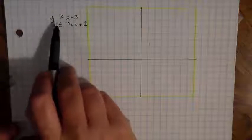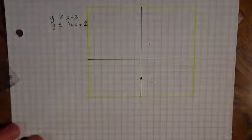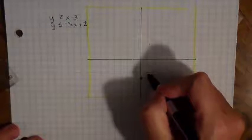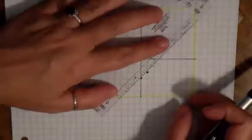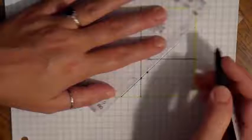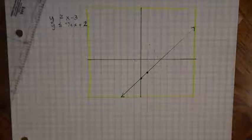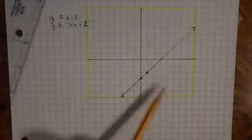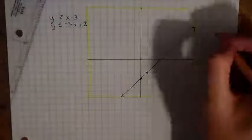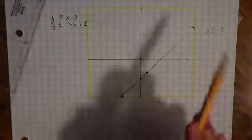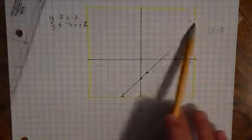I'll start with my first one: y is greater than or equal to x minus 3. I start at negative 3. x has no coefficient, so my slope is 1 — I go up 1 over 1. This is a solid line because I have an or equal to. Plugging in (0, 0), I get 0 is greater than or equal to negative 3, which is true. So I'll shade this whole section lightly.